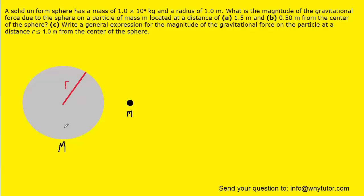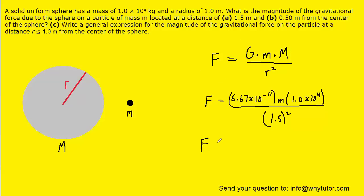Because this small particle is outside of the sphere, the entire mass of the gray solid sphere will contribute to the gravitational force. The expression for gravitational force has a constant G multiplied by the lowercase mass times the uppercase mass, divided by the distance between the two squared. Since the particle is located outside of the gray sphere, the entire mass of the gray sphere is plugged into this equation. When we plug in the distance, G, and capital M and simplify, we get lowercase m multiplied by approximately 3.0 times 10 to the minus 7th newtons per kilogram. This is the expression for the gravitational force acting on lowercase m.